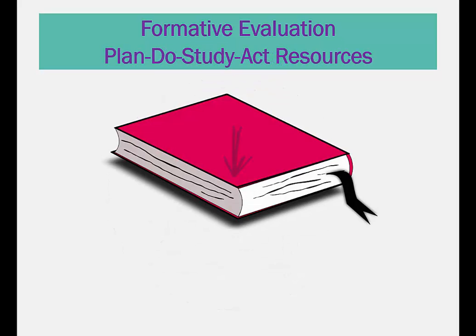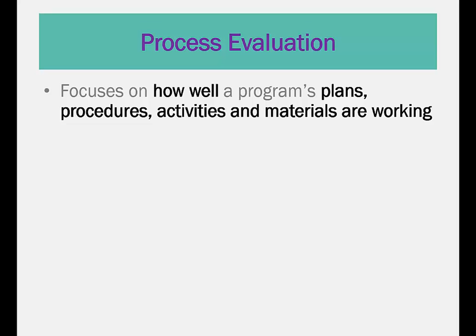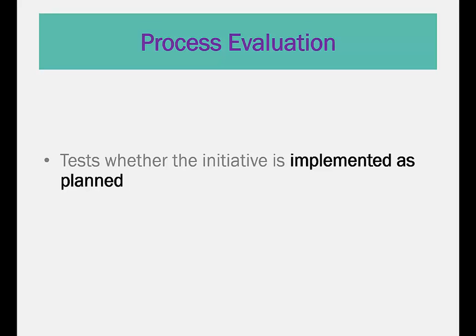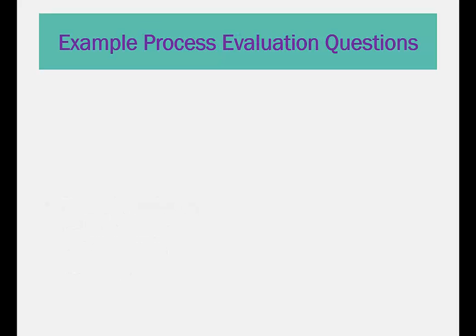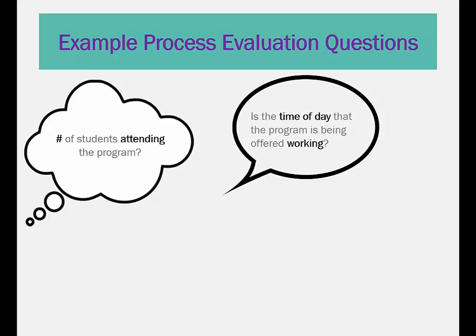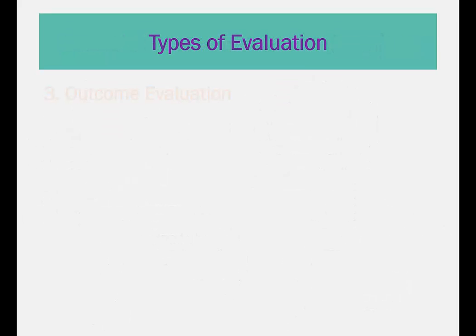The second type of evaluation is process evaluation. Process evaluation focuses on how well a program's plans, procedures, activities, and materials are working. This type of evaluation allows for early identification of problems and tests whether the initiative is implemented as intended. Example methods include focus groups, observations, and surveys. Examples of process evaluation questions might include: What is the number of students attending the program? Is the time of day that the program is being offered working? In what ways do the program activities align with the school curriculum? Do students who participate demonstrate improvements in knowledge?